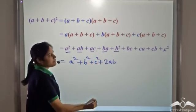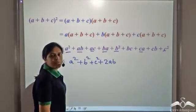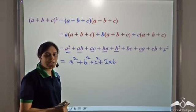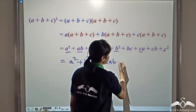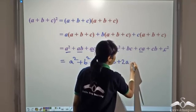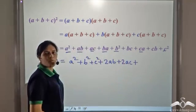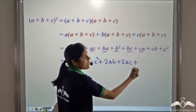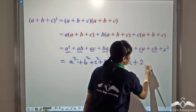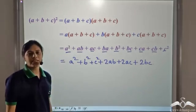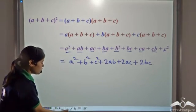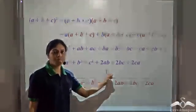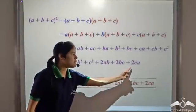We have an ac term and a ca term — these are like terms, so we combine them to get 2ac. What is left? We have bc and cb — since these are like terms, we get 2bc. So we get a² plus b² plus c² plus 2ab plus 2bc plus 2ca.